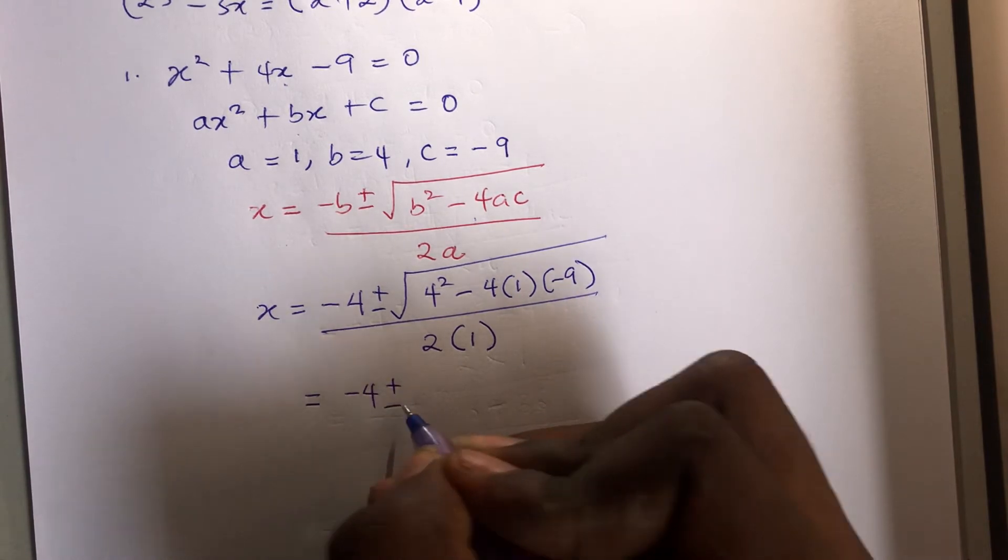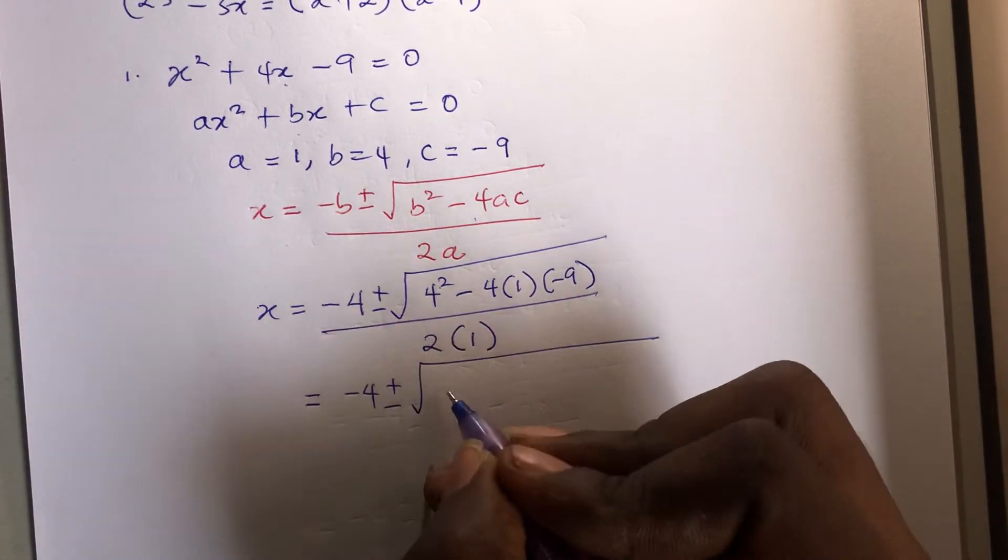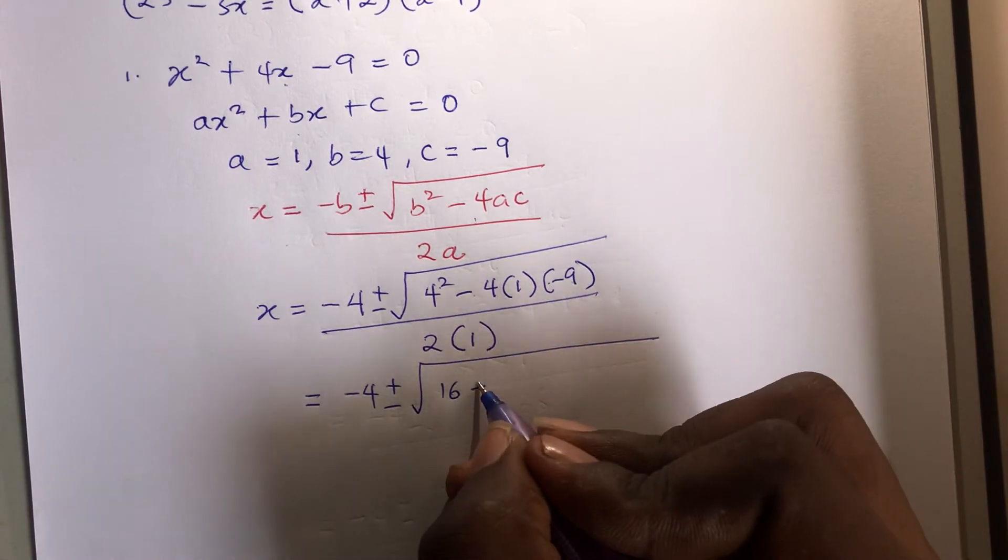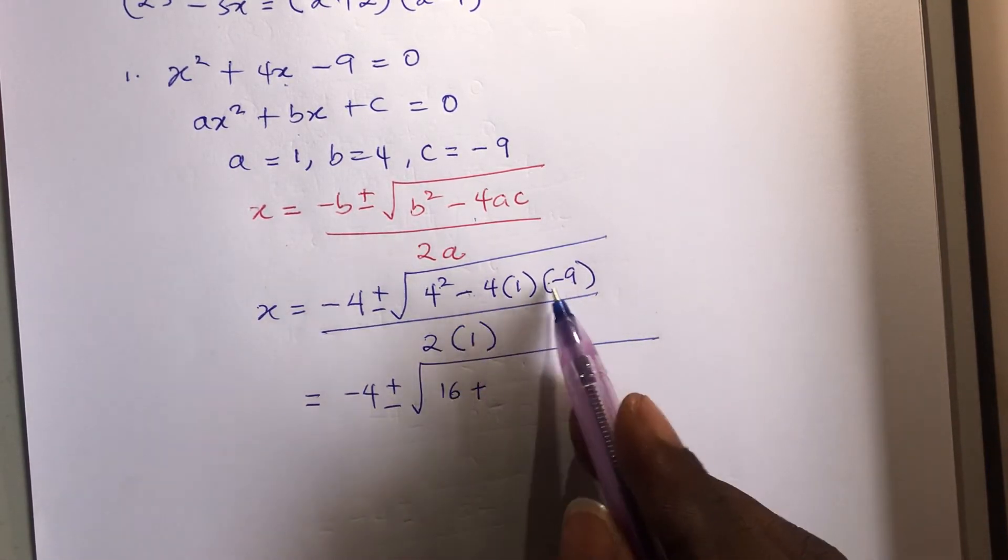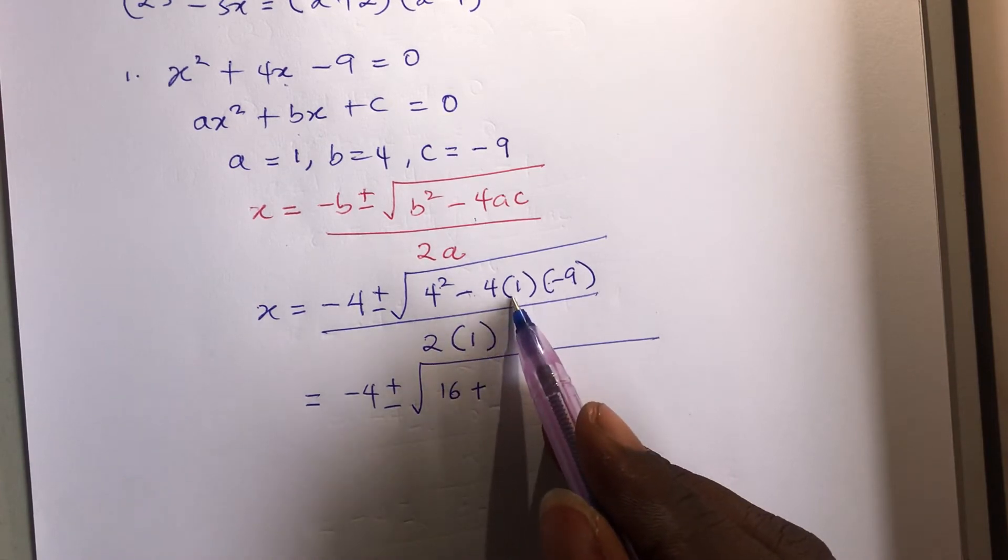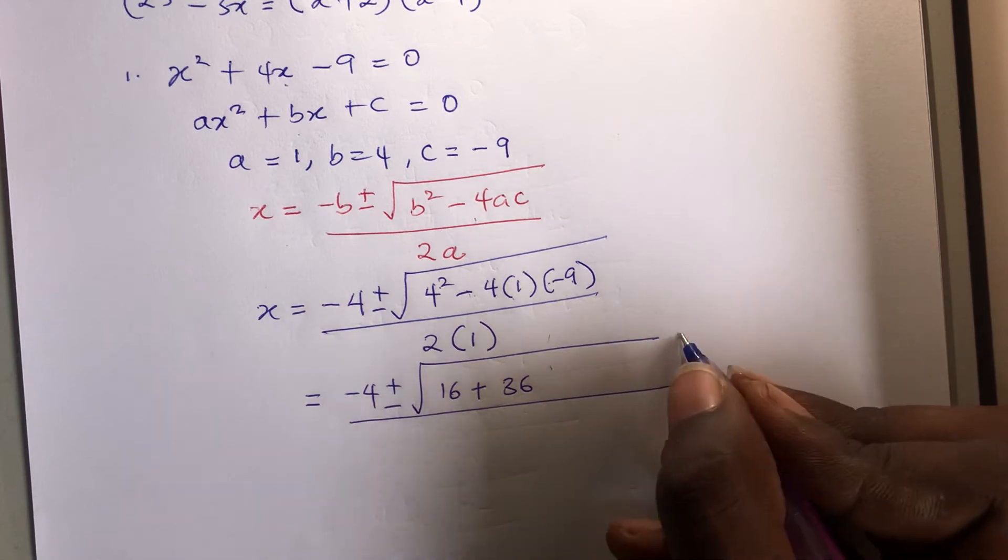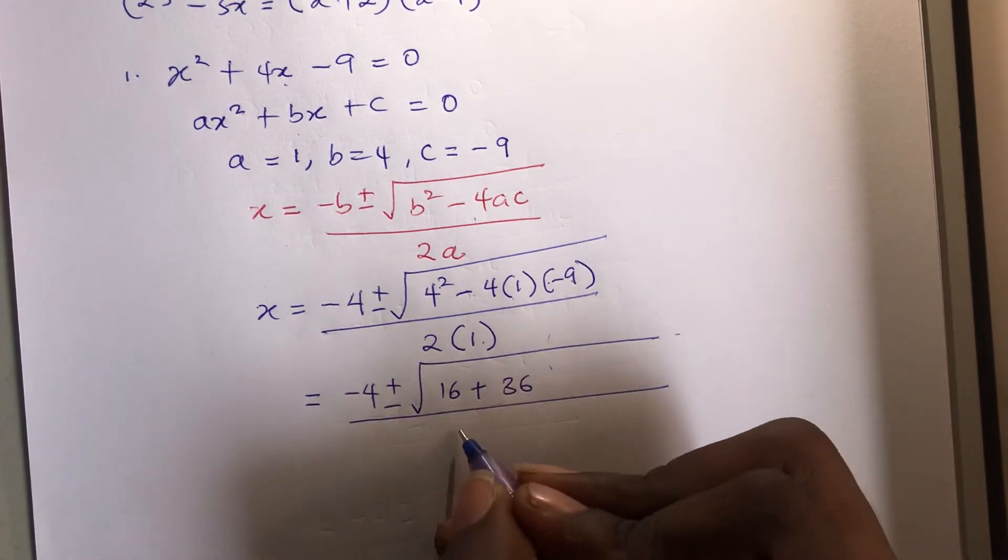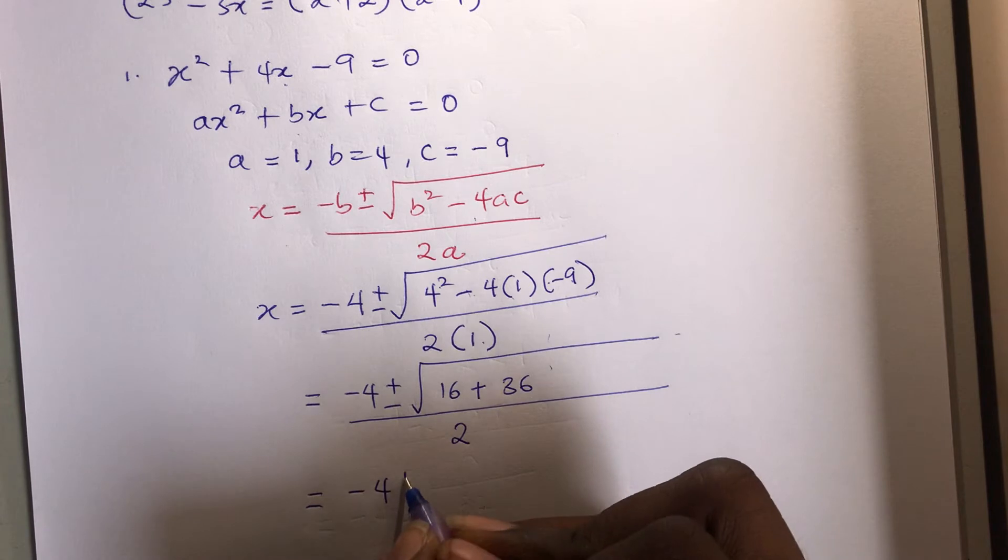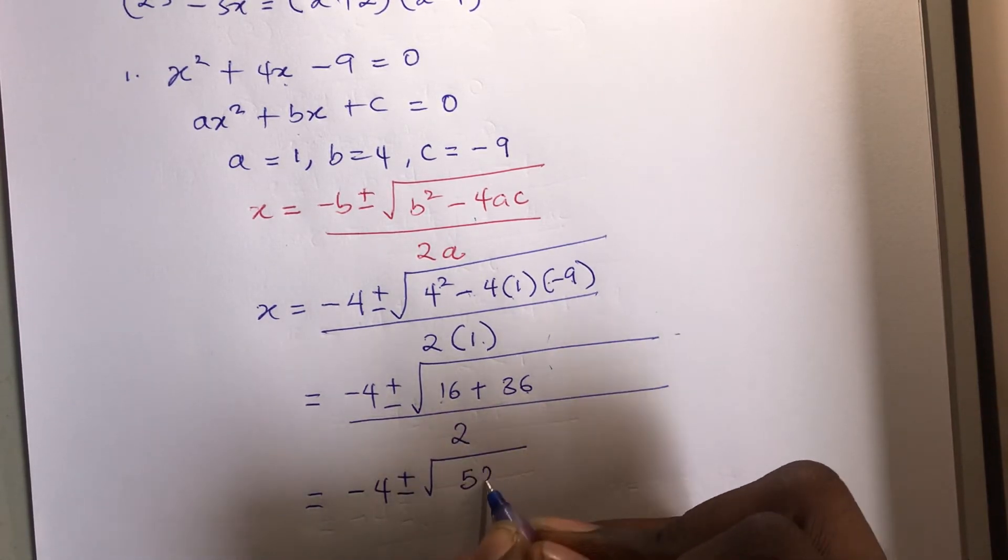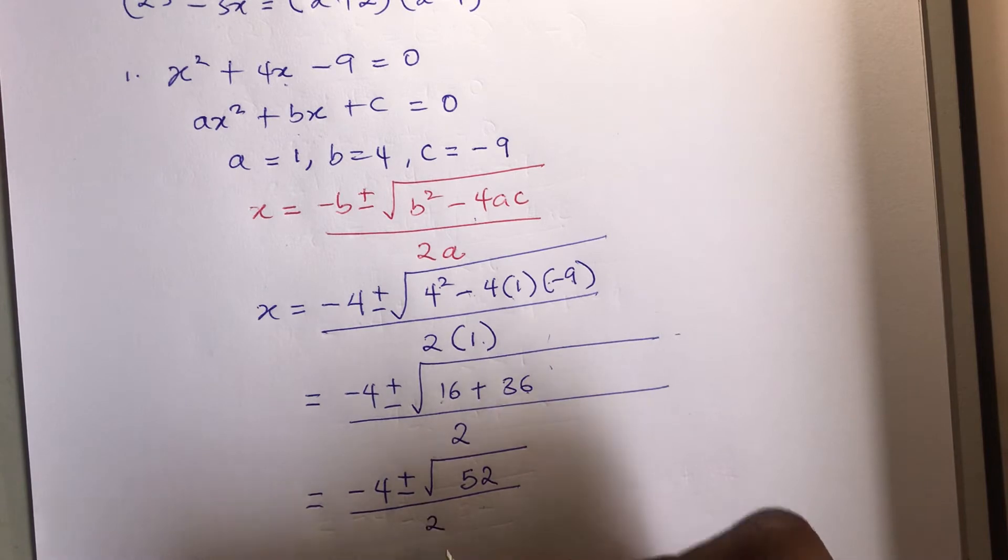So here we go. Minus 4 plus minus the square root of 4 squared is 16. And if we had to open this bracket this minus is going to multiply minus and give you plus. Minus times minus is plus, 4 times 1 is 4, 4 times 9 is 36. 2 times 1 is 2.